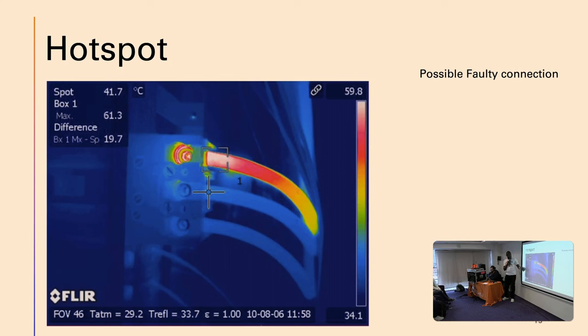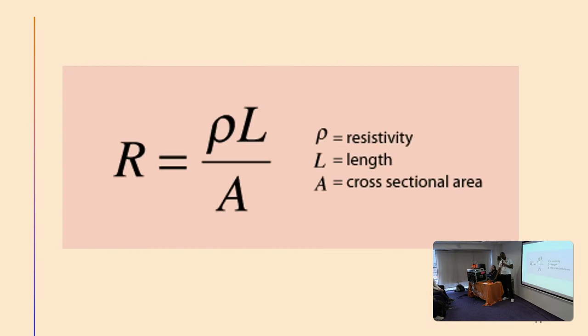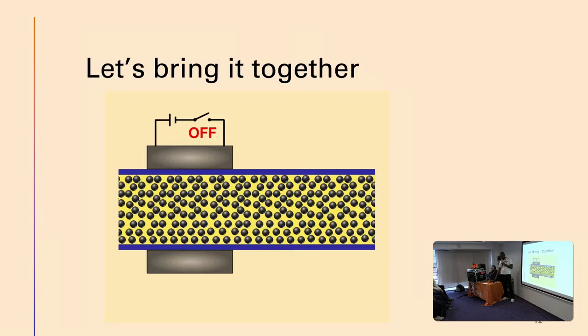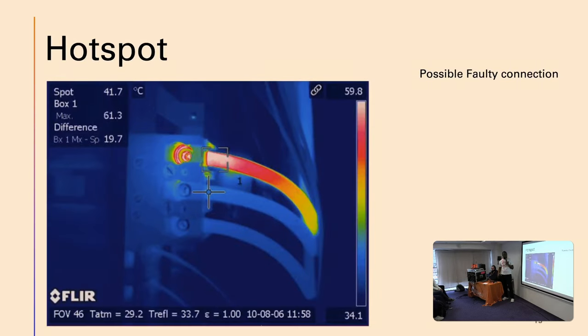You can see this is electrical connections, three of them, but only one is giving a heat reading there. What that means, if we go back to the formula, is the cross-sectional area is now smaller, which means it's a loose connection. Hence, we're able to take such readings. That's basically what these folks do—they take pictures and then look at them, try to predict.